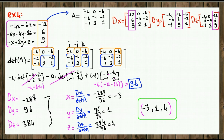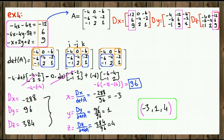To summarize the steps: convert the system into augmented matrix form, then prepare DX, DY, and DZ matrices by switching the x column with B column, the y column with B column, and the z column with B column. Next, take the determinants of A, DX, DY, and DZ using any technique. Finally, divide: DX over determinant of A for x, DY over determinant of A for y, and DZ over determinant of A for z. The values you get are the unique solution.